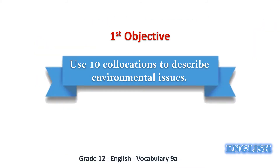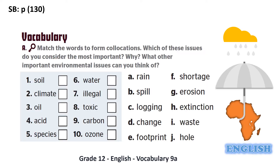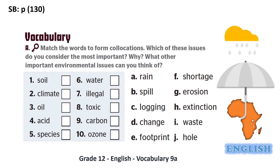Let's move to the first objective, which is using collocations to describe environmental issues. Let's start by going to exercise A on page 130 and match the words to form ten collocations. The first collocation is related to soil — we talk of soil erosion, referring to the wearing away or loss of soil by the natural physical forces of water. So letter G would be the answer.